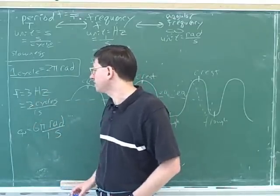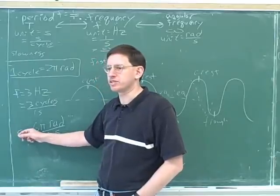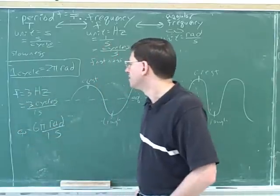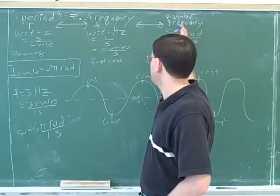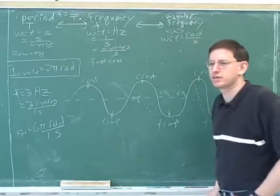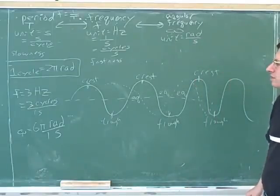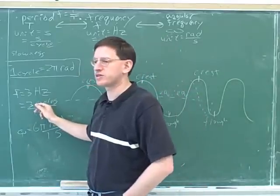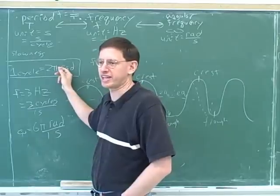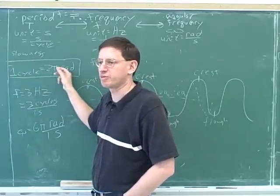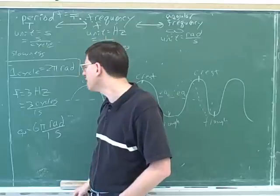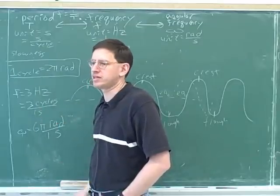The point of looking at this is to show that you can see why this is also called a type of frequency, because it's giving you very similar information. So, is the angular frequency a measure of fastness or slowness? Because it's really directly related to the regular frequency. If we're going through many cycles per second, we'll be going through many radians per second. The more cycles we're going through per second, the more radians we're going through per second. So, these are really just two different ways of measuring the same thing.